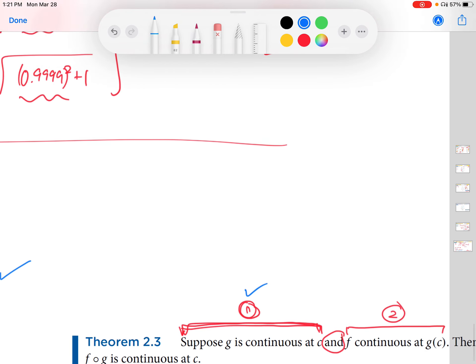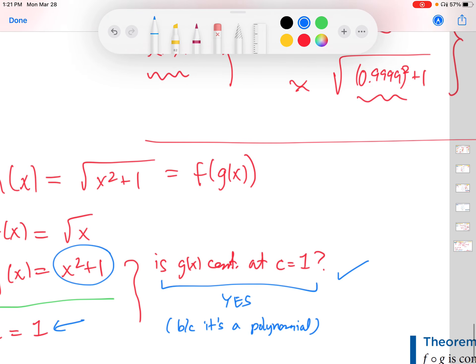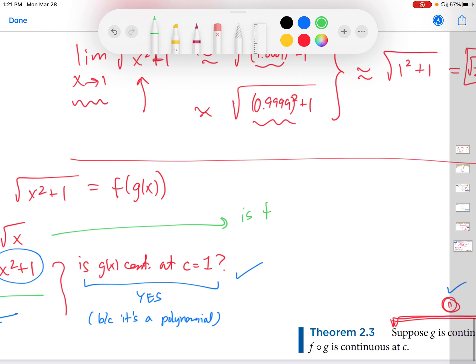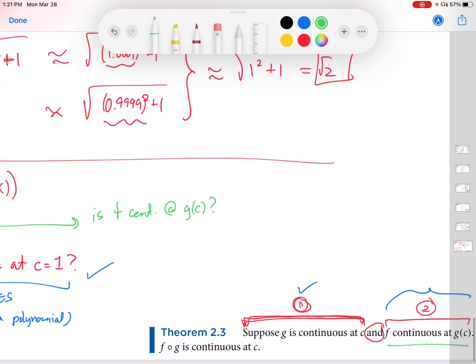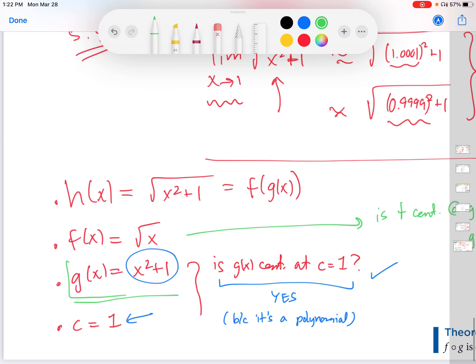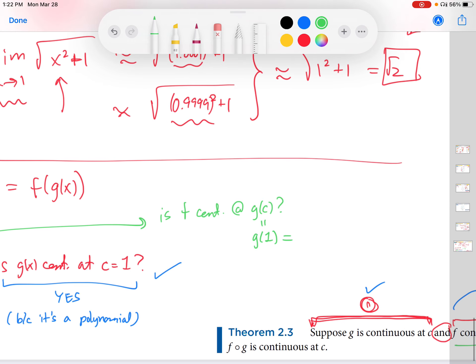Now let's look at the second one. Is f continuous at g of c? So first thing we have to do is we have to figure out what is g of c. So question, is f continuous at g of c? That's what the hypothesis says over here. What is g of c? Well, this is g of 1 because c is 1 in this problem. And then what is g of 1? Well, we'll go back to g of x. And then g of 1, 1 squared plus 1 equals 2. That equals 2. So new question: Is f continuous at 2?